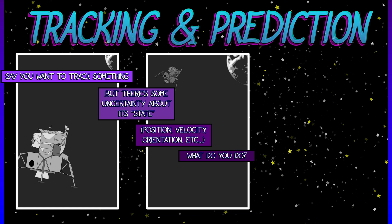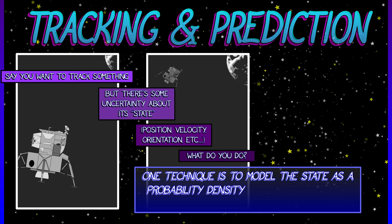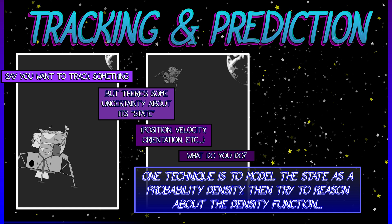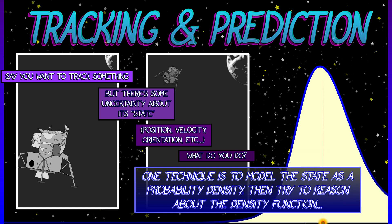One technique is to model that state in terms of a probability density, to keep track of a whole bunch of different random variables, one for each coordinate of position, for each component of velocity, things like that. And then we keep track of the expectation and the covariance of that collection of random variables on the state.